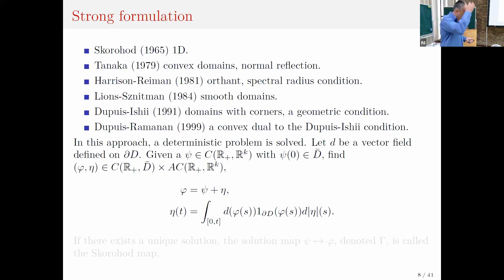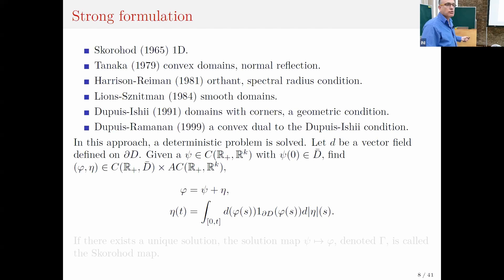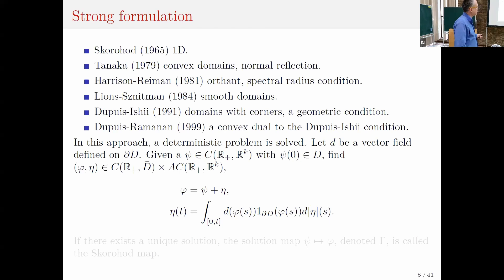The problem is to find a pair where the first component is the constrained version of psi, called phi. The second is the constraining term. The first one is continuous and takes values in the closure of the domain. The other term is absolutely continuous, such that the constrained trajectory equals the unconstrained data plus the constraining term. The constraining term can change only when the constrained trajectory is on the boundary.